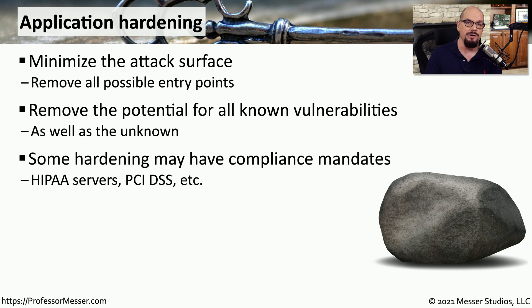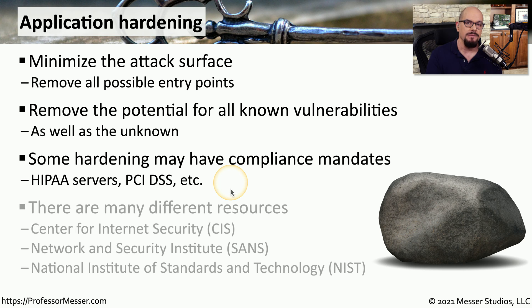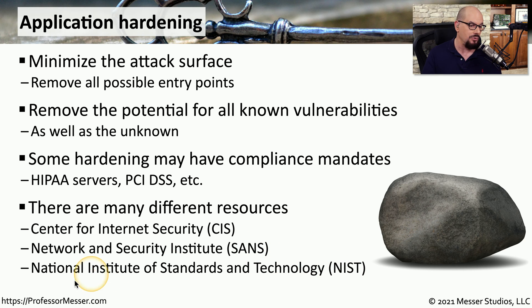Sometimes this attack hardening comes from a third party or from an existing compliance. For example, there are specific regulations regarding HIPAA servers or PCI DSS credit card protection. We can use the guidance from these compliance mandates to provide additional application hardening. If you're not sure where to start, there are resources available from the Center for Internet Security (CIS), the SANS Institute, or NIST, the National Institute of Standards and Technology.